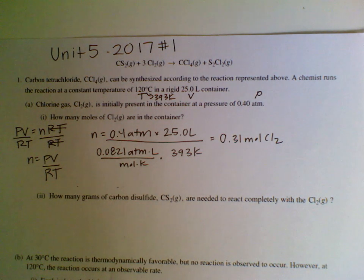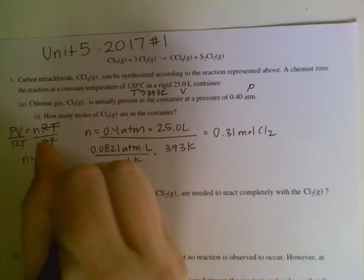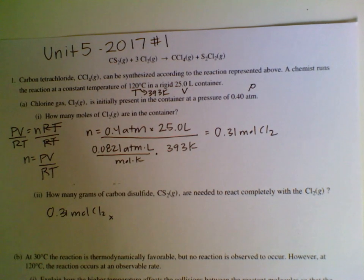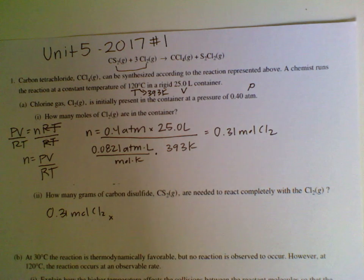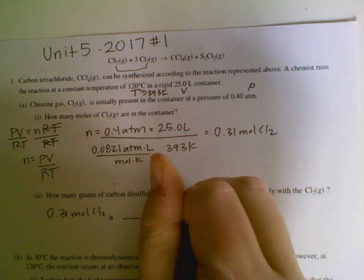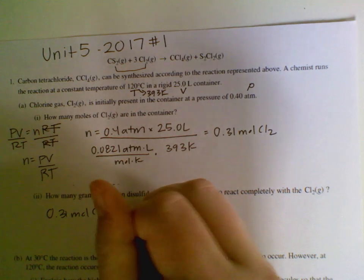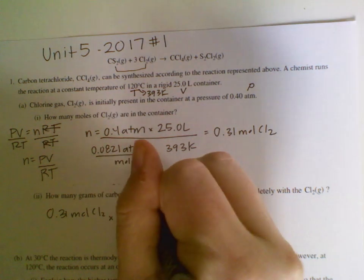For part A2, it says how many grams of carbon disulfide are needed to react completely with the Cl2. So we got a stoichiometry problem on our hands. We know that we have 0.31 moles of Cl2. And we want to go to carbon disulfide, which is CS2. So if we look here, we've got Cl2 and CS2. There is a coefficient of three in front of the Cl2. So it's going to be three moles of Cl2 for every one mole of CS2.